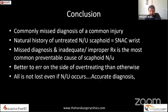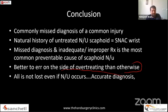In conclusion, scaphoid non-union is a commonly missed diagnosis of a very common injury. Its natural history tends towards development of arthritis and can be very debilitating. Missed diagnosis and inadequate or improper treatment are the most common preventable causes. It is better to err on the side of over-treating rather than under-treating. All is not lost even if non-union occurs — accurate diagnosis and appropriate treatment can still salvage the situation.